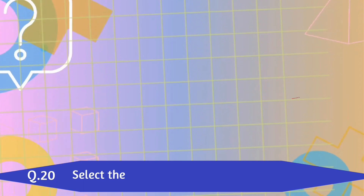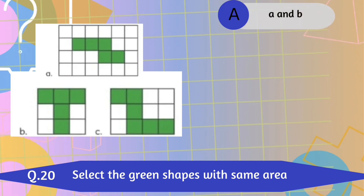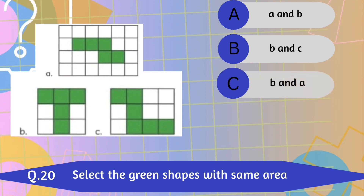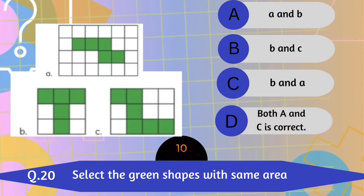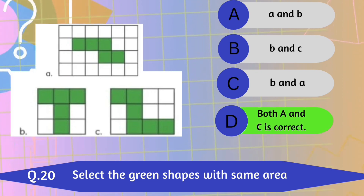Question number 20. Select the green shapes with the same area. A and B. B and C. Both A and C is the correct answer.